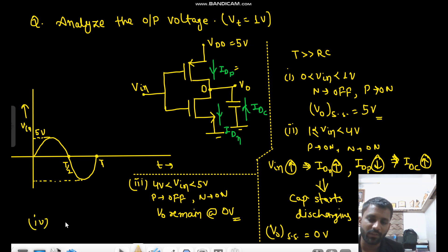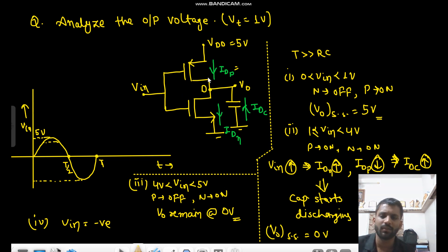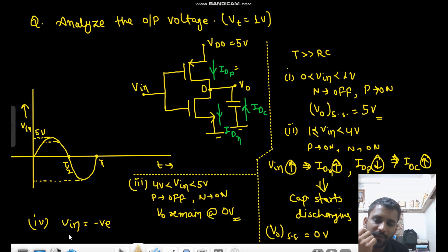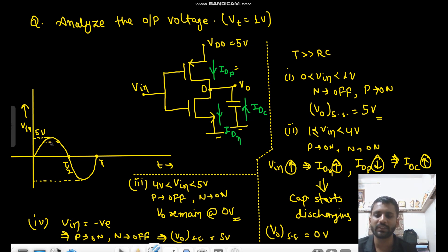The fourth condition: if Vin is negative, then PMOS will be on and NMOS will be off. That means Vnot steady state would be 5V. Since PMOS is on and NMOS is off, Vnot steady state = 5V.